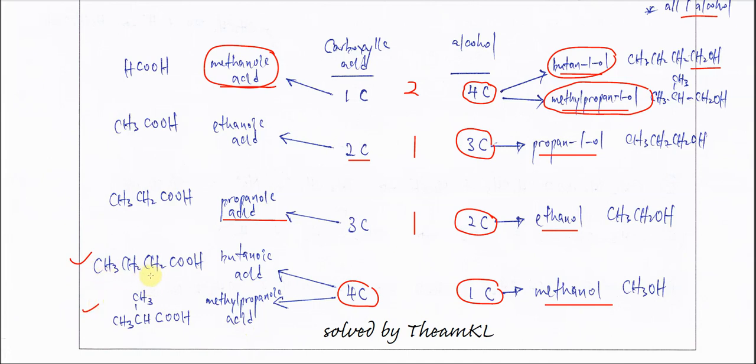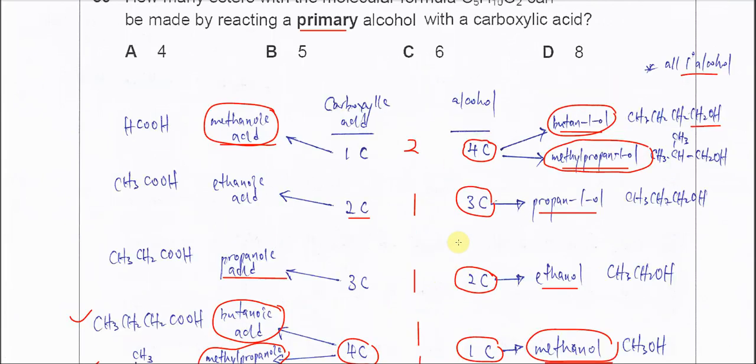It can be straight chain or branched. So this carboxylic acid will react with this alcohol to form 1 ester. This methylpropanoic acid will react with methanol to form another ester. So therefore, the total esters that can be formed is 6. The answer is C.